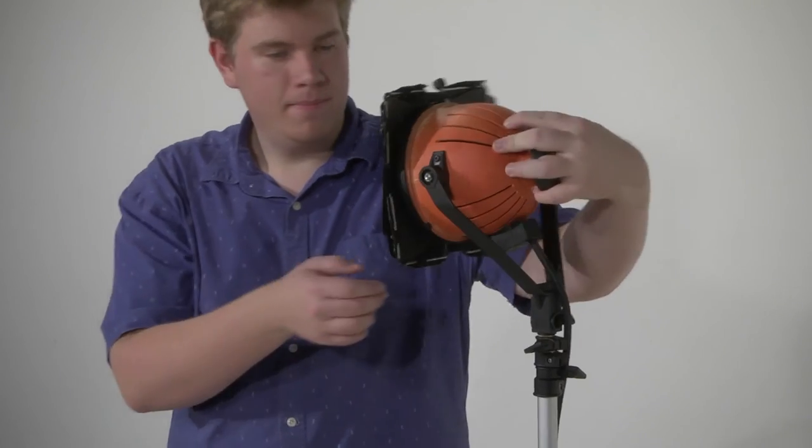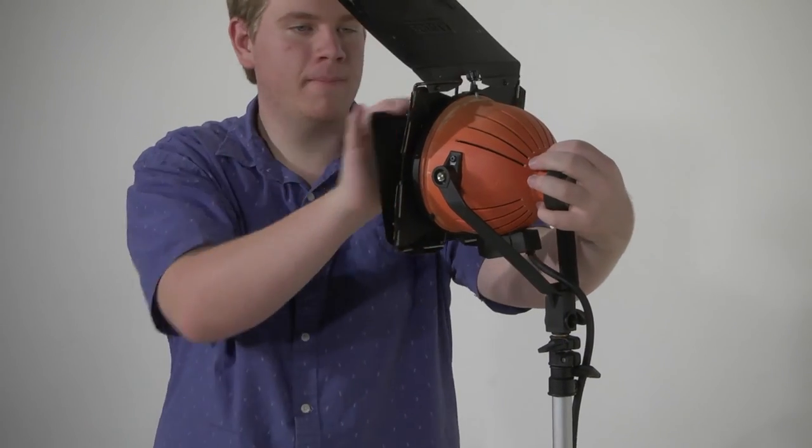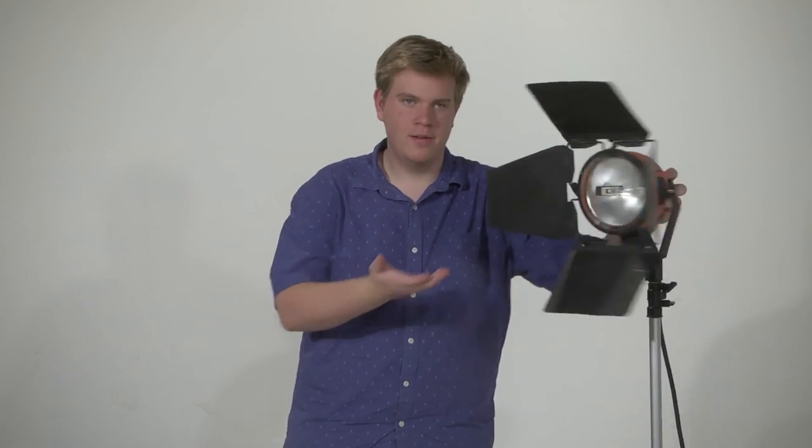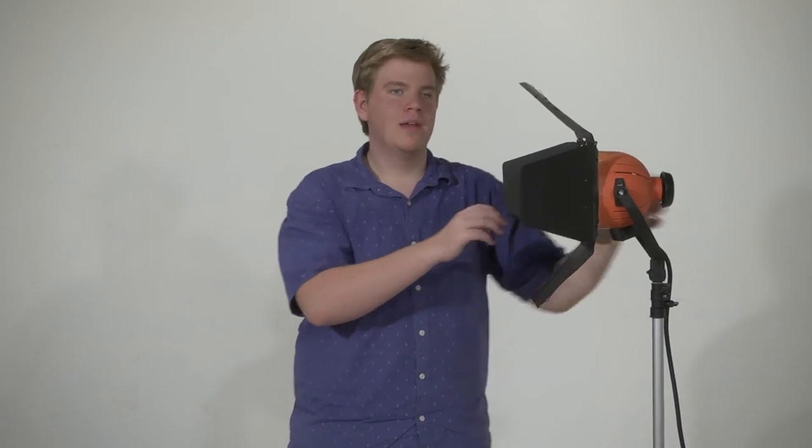Now on the light here you've got barn doors. Open them up and inside you've got a light. Now these barn doors allow you to manipulate the light so you can cut it off.